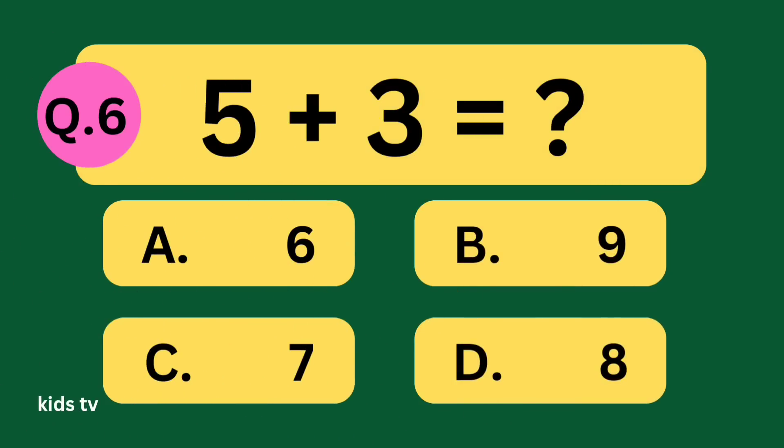5 plus 3 equal what? A: 6, B: 9, C: 7, D: 8.